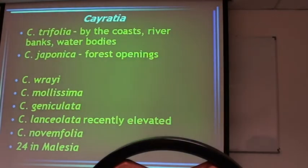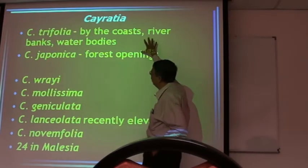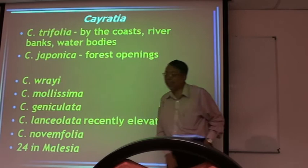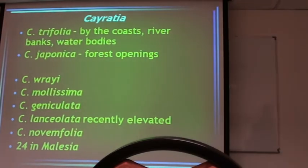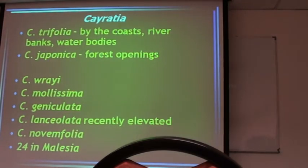Then I am left with the Cayratia. Many of you have seen some Cayratia. There are 24 altogether species. I put this in one section and the other one in another section, for a similar argument.